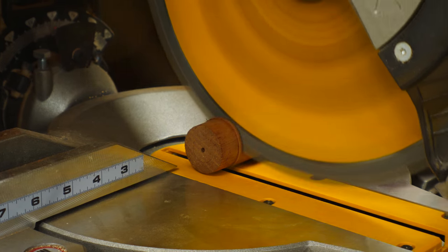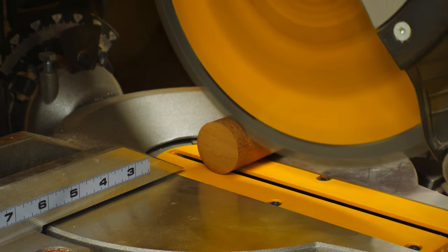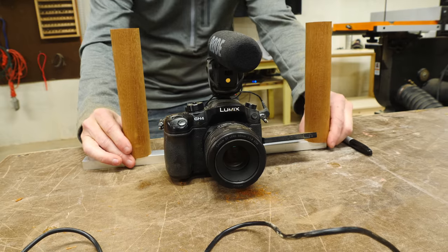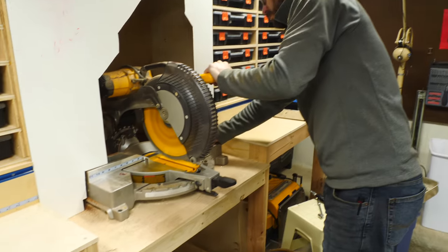After getting the handles off the lathe, I used a miter saw to square up the ends, and I cut off a small piece to use later on. After setting the handles in place, I realized it was too wide, so I cut it down a little bit more.